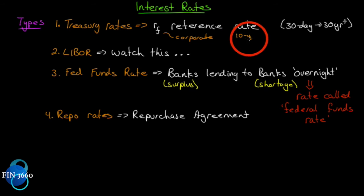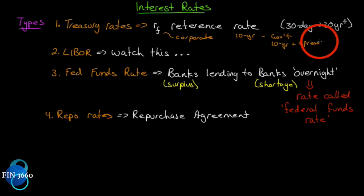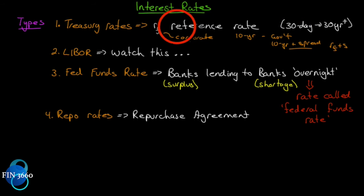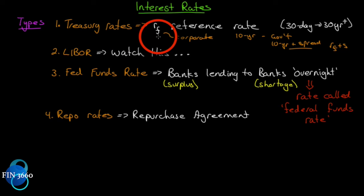Corporate bonds usually quote an equivalent-term treasury plus a spread. So if a corporation is issuing a 10-year bond, it will be quoted as the government 10-year plus some spread at issuance — that spread reflects the risk of the corporate over the government rate, because the government rate is considered risk-free. Treasury rates range from 30-day all the way up to 30-year and beyond.